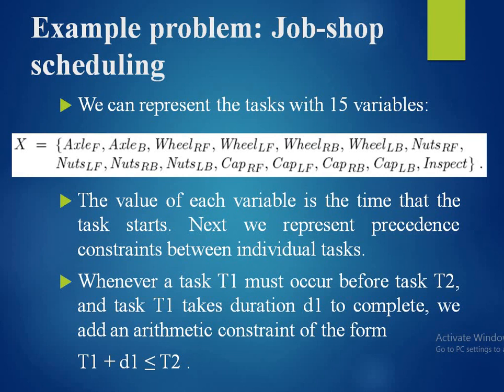We represent the tasks with 15 variables: X = {axle_lf, axle_lb, wheel_rf, wheel_lf, wheel_rb, wheel_lb, nuts_rf, nuts_lf, nuts_rb, nuts_lb, cap_rf, cap_lf, cap_rb, cap_lb, inspect}. The value of each variable is the time that the task starts.